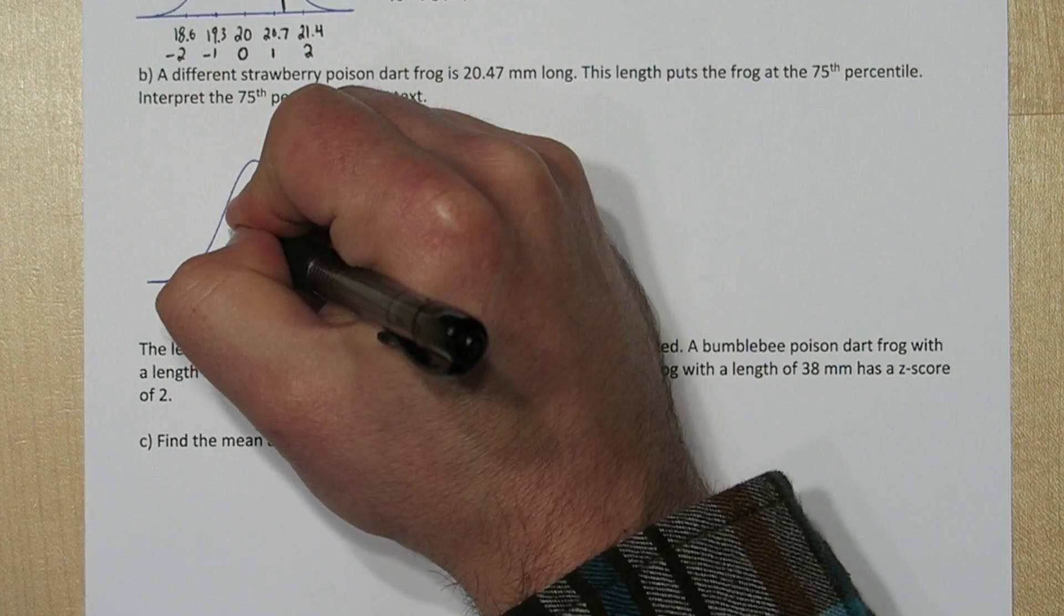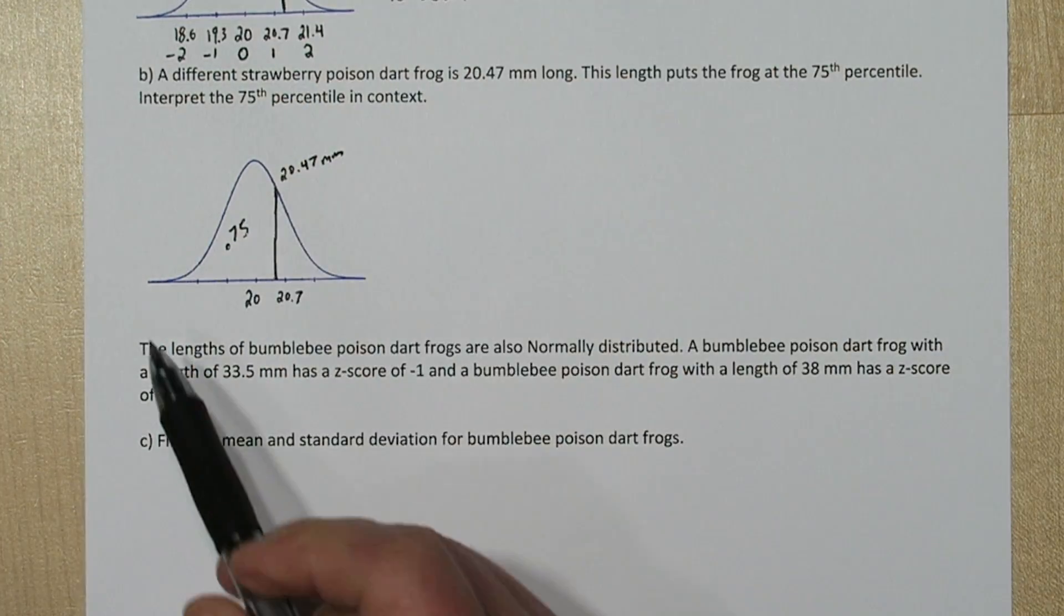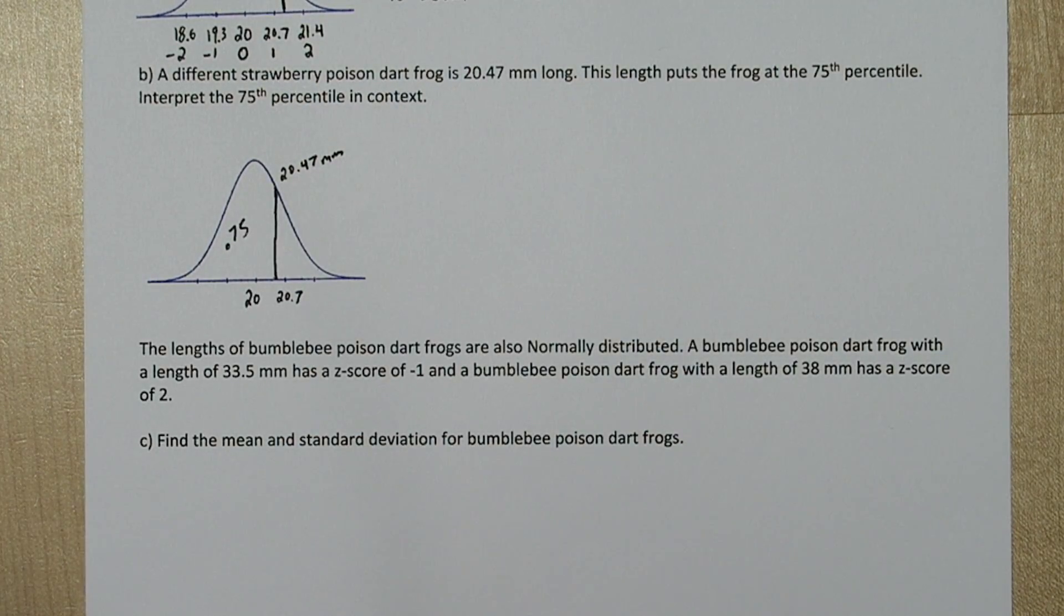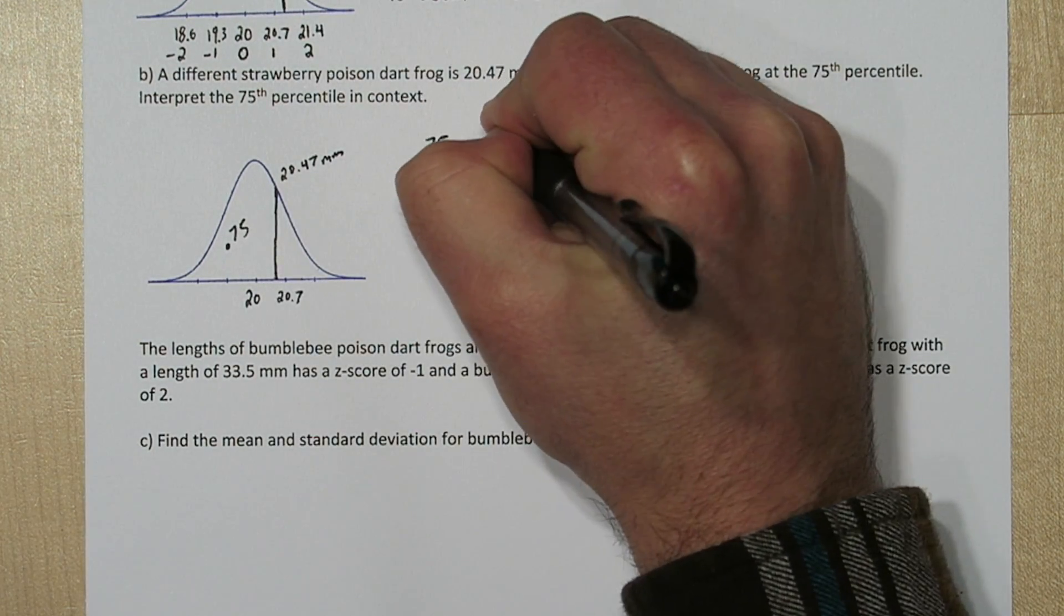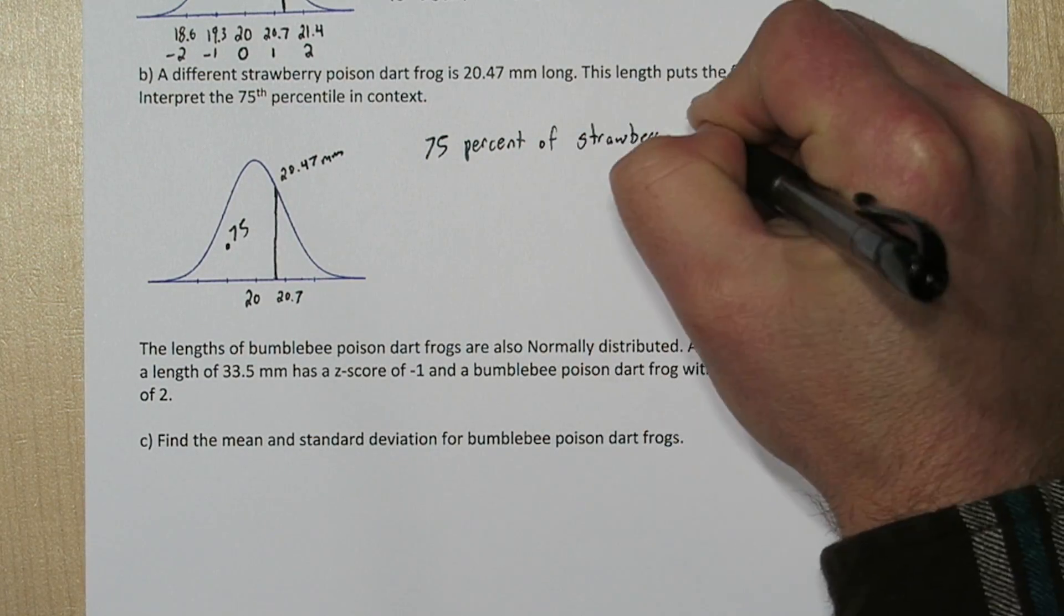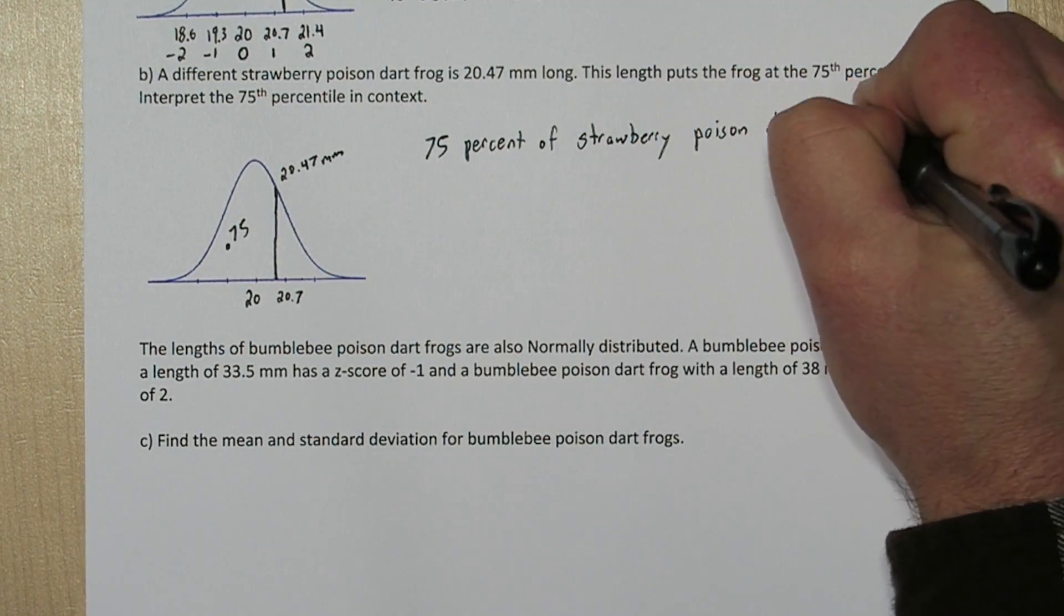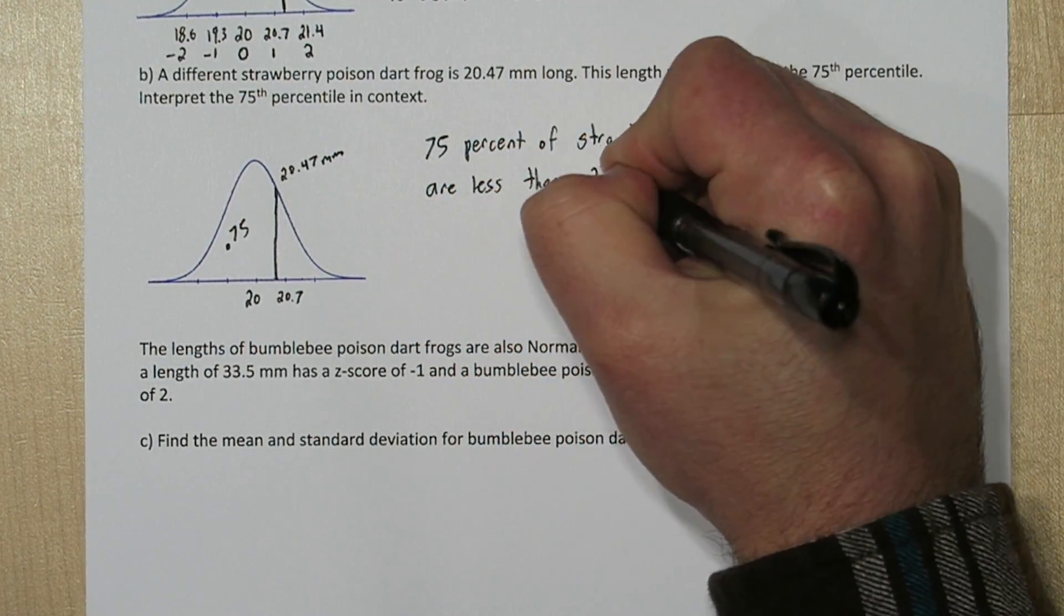The area under the entire normal curve is 1. So 75% of the lengths are below this cutoff value. So to interpret it, we'll say 75% of strawberry poison dart frogs are less than 20.47 millimeters.